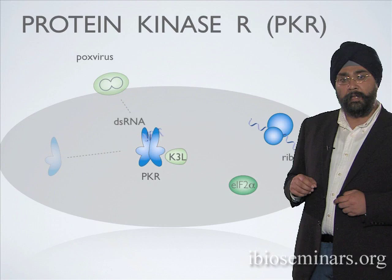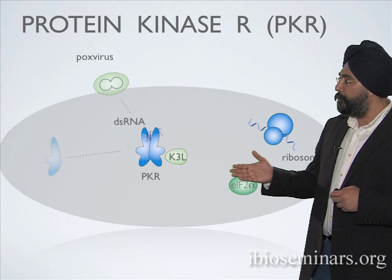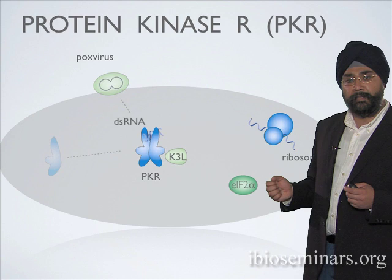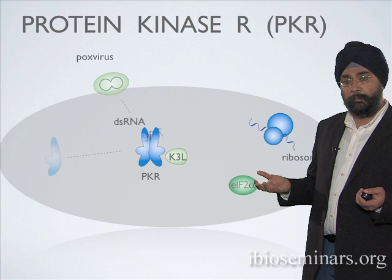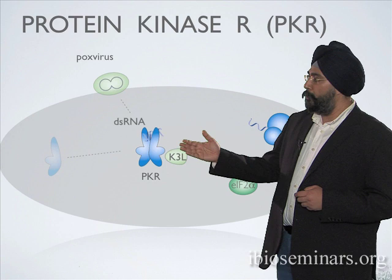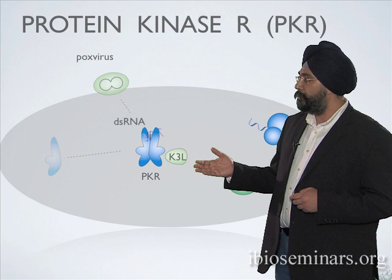Today we're focusing on only one of these antagonists, encoded by the poxviral class of proteins — including smallpox and vaccinia virus — called K3L. K3L acts as a competitive and non-competitive inhibitor, essentially breaking the interaction between PKR and EIF2-alpha, which allows the virus to restore protein production and continue its lifecycle. We started by looking at what this arms race with multiple viral antagonists has done to PKR evolution.